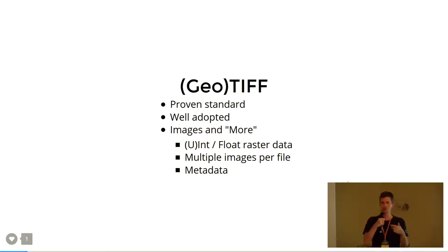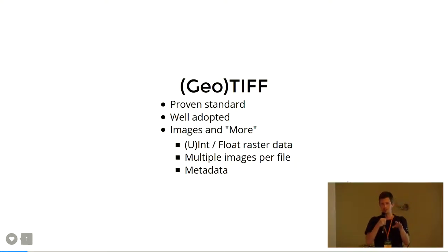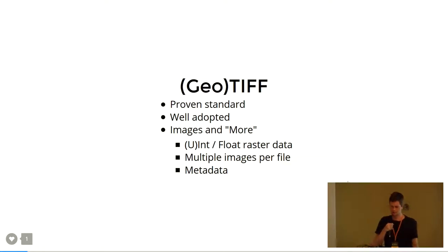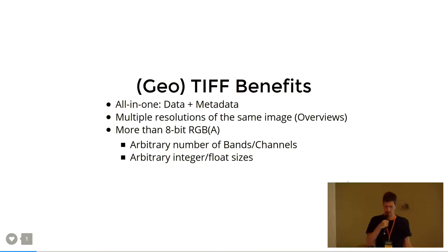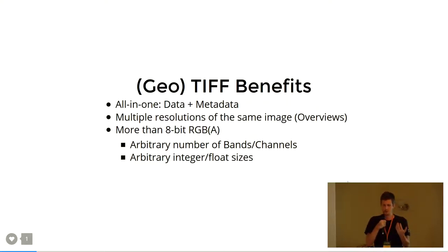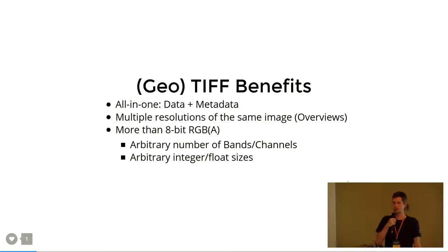You can have RGB data, and you can even put multiple images into one file. We call those overviews — it's the same image but in lower resolution for faster display. You can also have metadata, for example geospatial metadata, which makes a TIFF a GeoTIFF. The benefits are self-describing: you have everything in one file — the metadata and the data. You can have multiple resolutions, more than 8-bit RGB, arbitrary bands or channels, and an arbitrary data type.